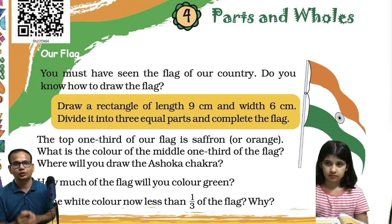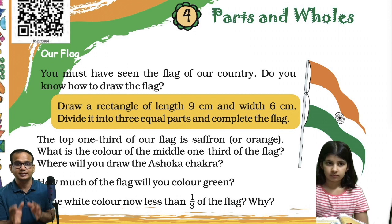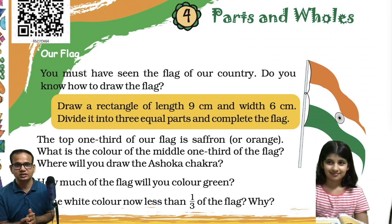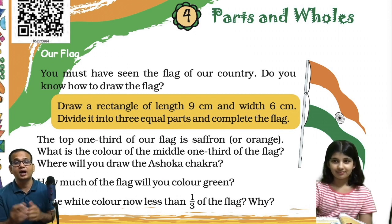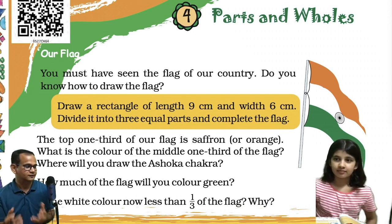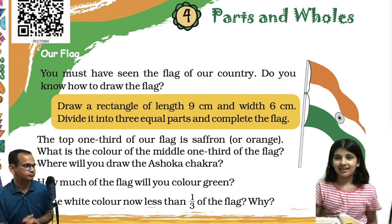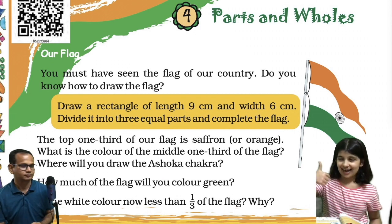Welcome back to this channel. Today we'll be talking about chapter 4 of the class 5th NCRD book Mathemagic. The chapter name is Parts and Wholes. Shall we start, Avisha, without wasting further time? Yes, let's start.